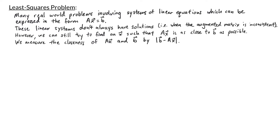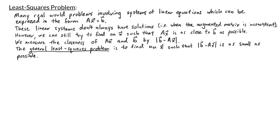We measure the closeness of two vectors by looking at the magnitude of the difference of those vectors. The smaller the magnitude of B minus A times x, the closer those two vectors are to each other. The task of finding an x that makes the magnitude of B minus A times x as small as possible is called the general least squares problem. We use the term least squares because we're trying to minimize the magnitude of B minus A times x, and this magnitude is the square root of the sum of squares — so essentially, we're minimizing the sum of those squares.